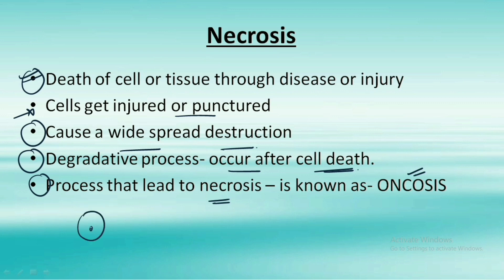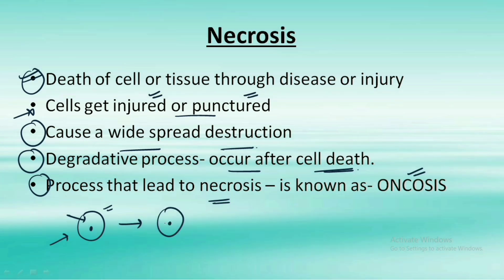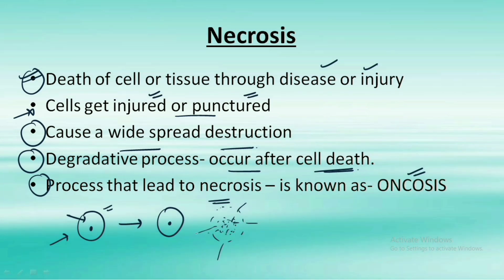In necrosis, a cell with some disease or injury gets punctured or ruptured. As a result, the cellular contents of that particular cell release into the surrounding environment, causing widespread destruction. Because the reason for death is disease or injury, it is called necrosis. The process is a degraded one.